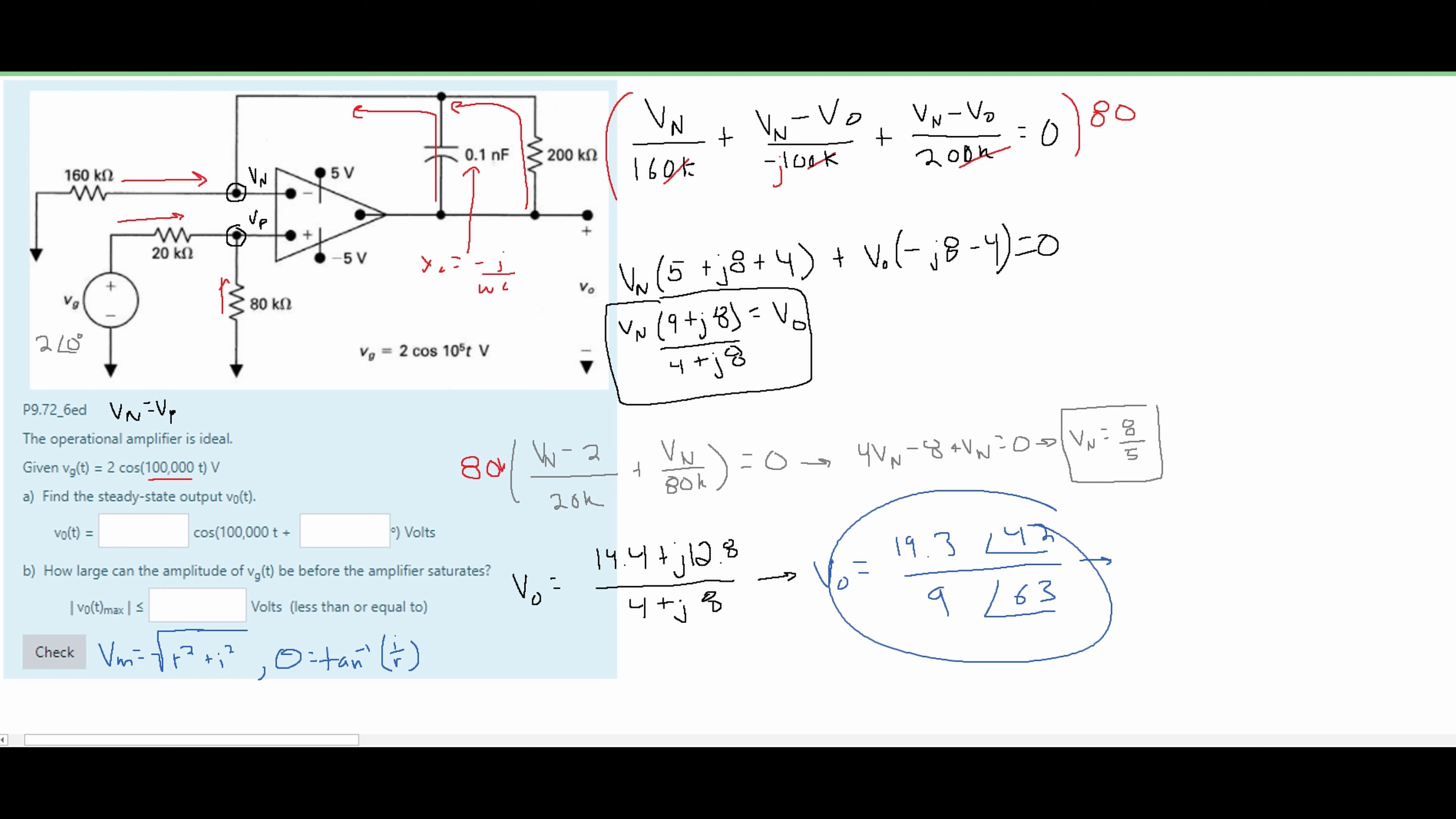And if we do this we are going to get these values for our polar form. We're going to take our numbers divide them and then we're going to take our angles and subtract the denominator angle from our numerator angle. And that is going to be our answer for part A.